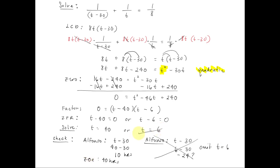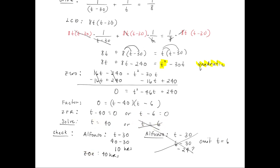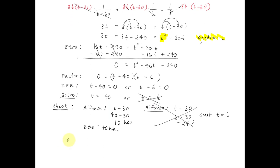We keep t equals 40. This means that Alfonso can do the job in 10 hours, while Zoe can do the job in 40 hours.